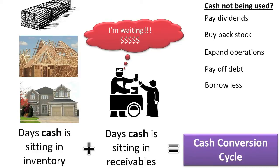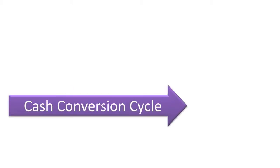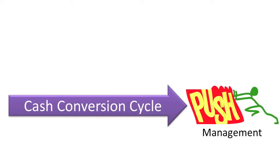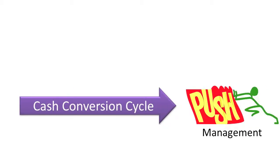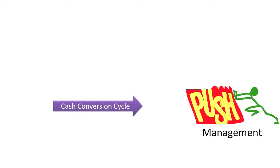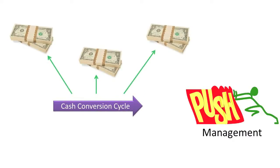By using the freed up cash to pay off debt and reduce borrowings, the company's finance costs will decrease and its income will increase. In general, wise management constantly strives to reduce its cash conversion cycle, and thereby free up cash and reduce financing costs.